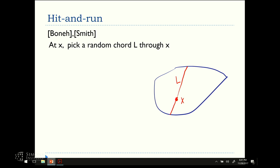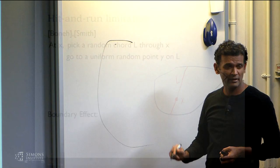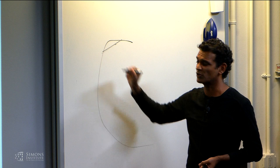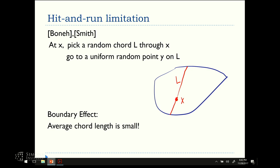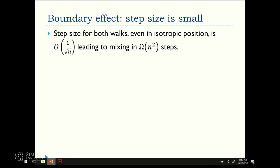Hit and run is the other process that's been analyzed and is practical. In this one has no parameter delta. At a point, you pick a random direction and the chord through it, and then a uniform point on that interval. This is also symmetric. The stationary distribution is as we want. There is no rejection filter needed, but it has the same problem. What actually happens is that the chords, if I were to pick in my body a random point, it's very likely near the boundary, and then I pick a random chord, it's very likely going to be pretty short. About basically the length of the step that we were taking with the ball walk, one over root N on average.